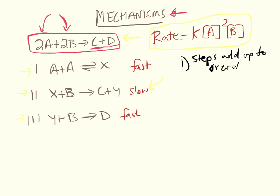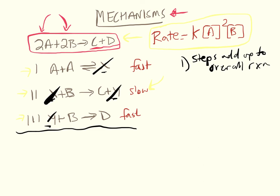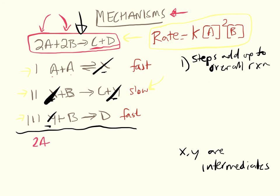To check if a mechanism is valid, criterion one is that the steps must add up to the overall reaction. Adding all reactants and products across the three steps: X is a product in step 1 and a reactant in step 2, so it cancels; Y cancels similarly. X and Y are intermediates — they appear in the mechanism but not in the final overall reaction. What's left is 2A + 2B → C + D, which matches the overall reaction.